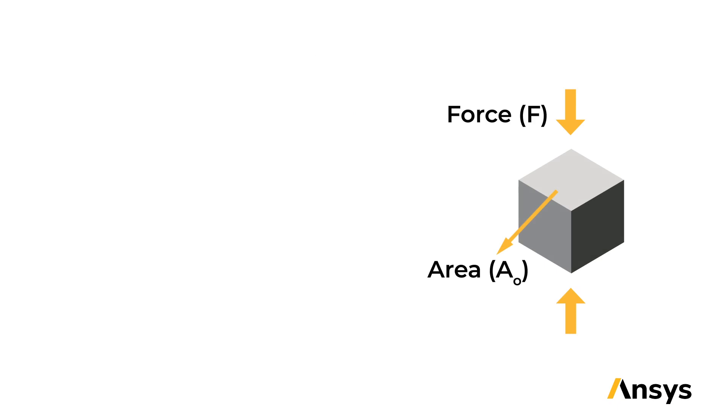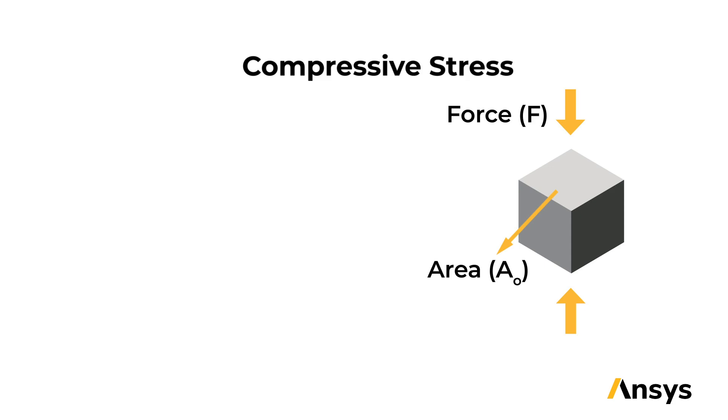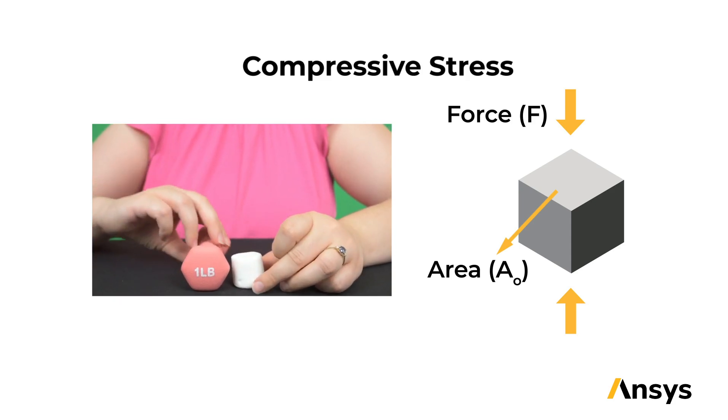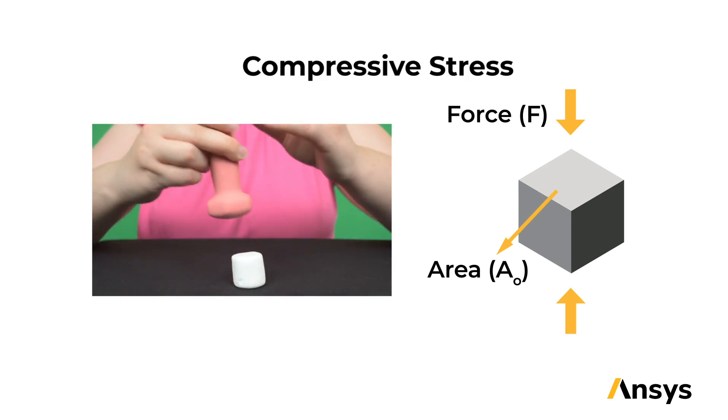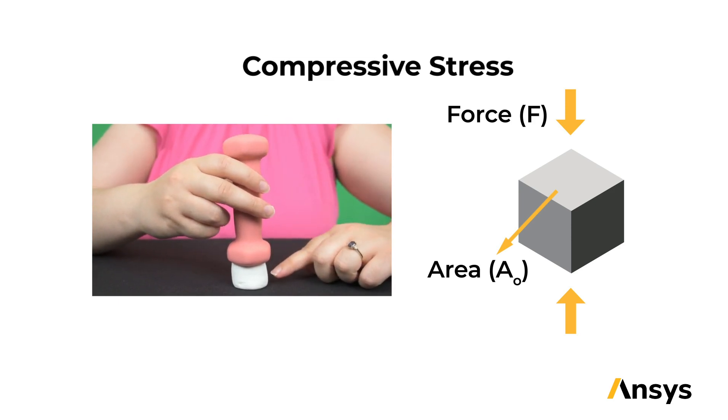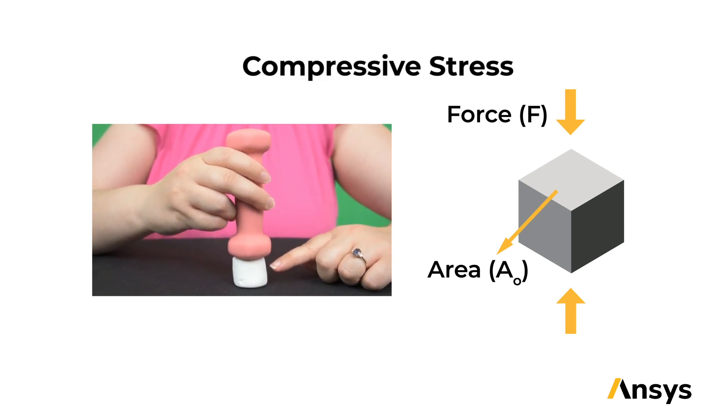What if we switch the direction of the force? This changes to a compressive stress, what we saw in our building columns. We can visualize this through squishing something, say, a marshmallow. As I apply the same 1 lb. weight to the marshmallow, we can see it compress. When the weight is removed, the marshmallow springs back.